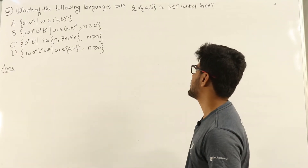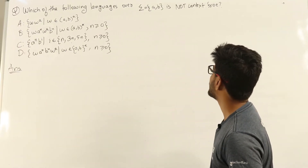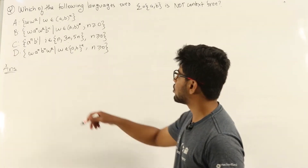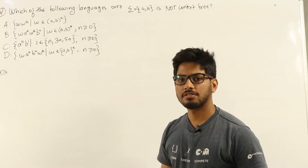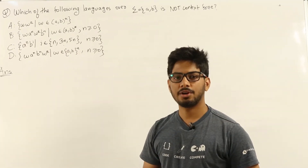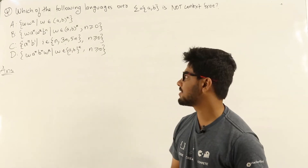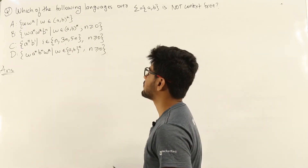Which of the following languages over Sigma equal to {a, b} is not context-free? Four options are given. This is a question from Theory of Computation regarding context-free languages. We'll go through each of the options one by one and see which among these is not context-free.